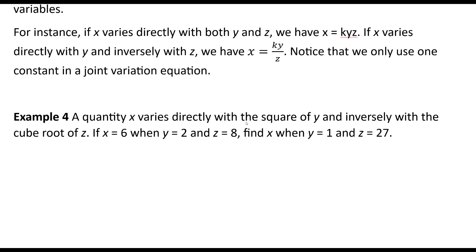So a quantity x varies directly with the square of y and inversely with the cube root of z. So we have x equals k times y squared over the cube root of z. If x is 6 when y is 2 and z is 8, we'd have 6 equals k times 2 squared over the cube root of 8.